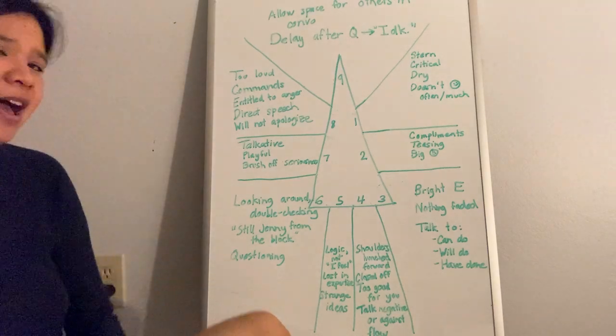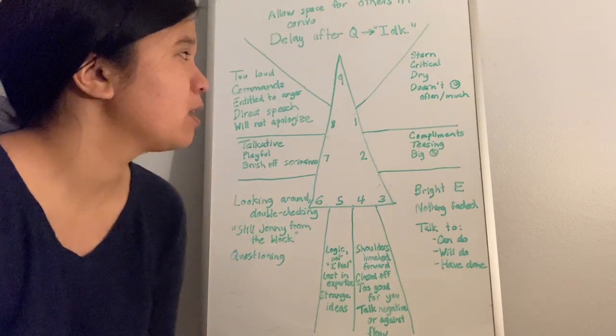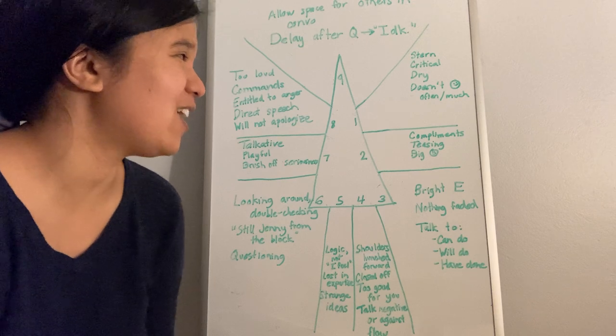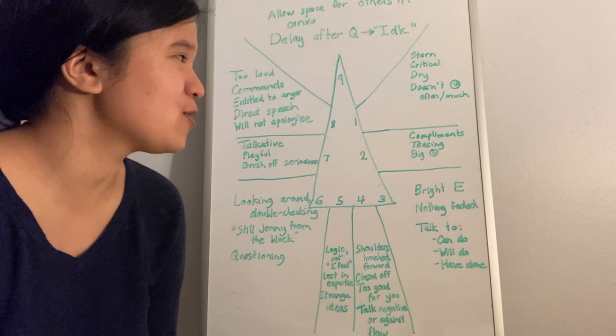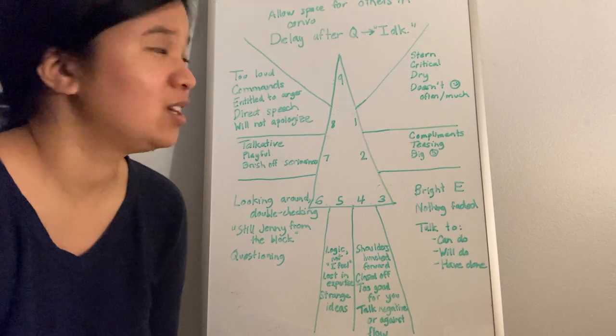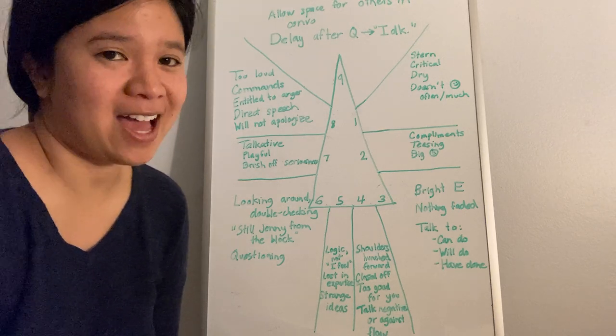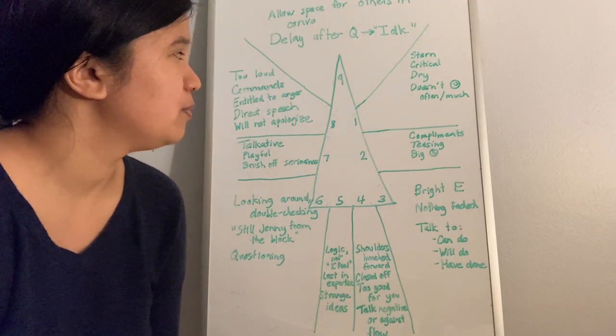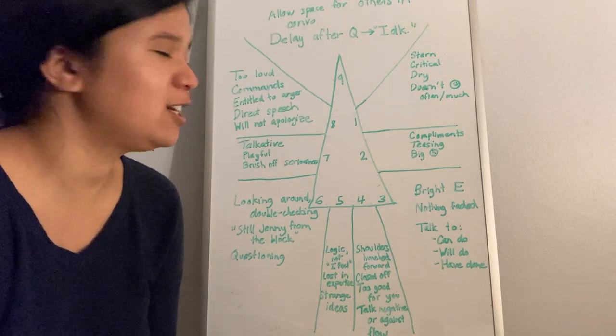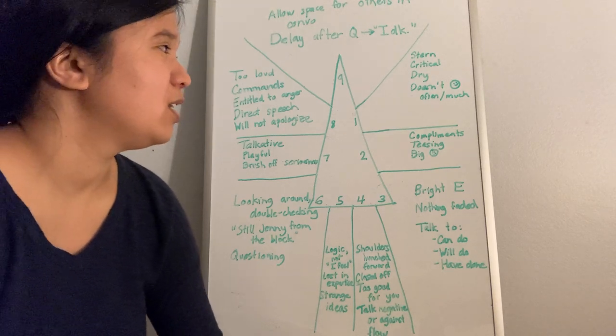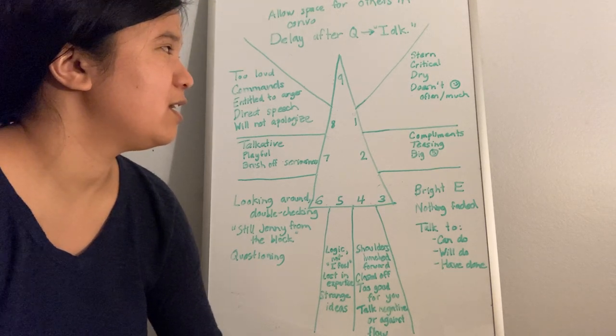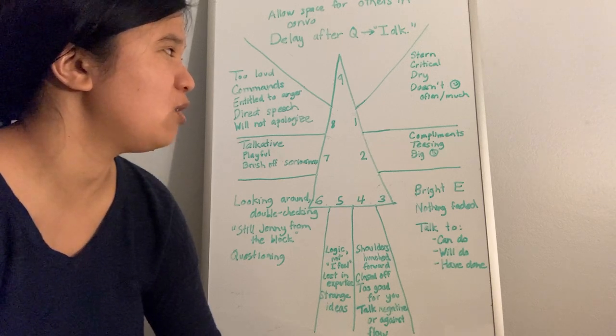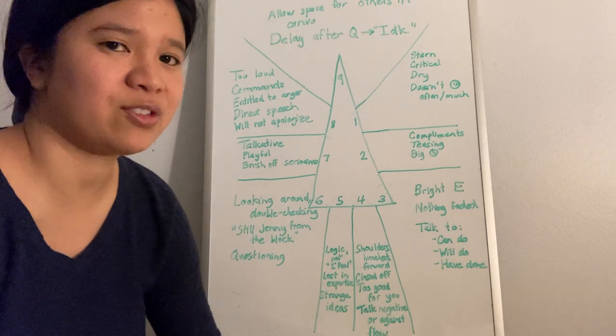Finally, we have type 1, my boyfriend. Stern, critical, dry, doesn't smile often or doesn't smile much. Thank goodness he has his 9 wing and his heavy 2 wing. I don't think he can really see it in himself, but even though he's developed in his health, these are definitely his default states.